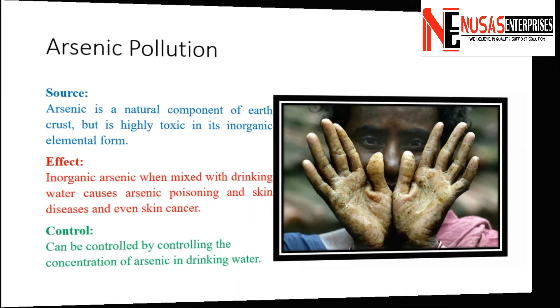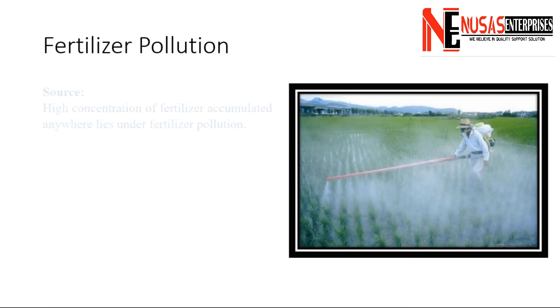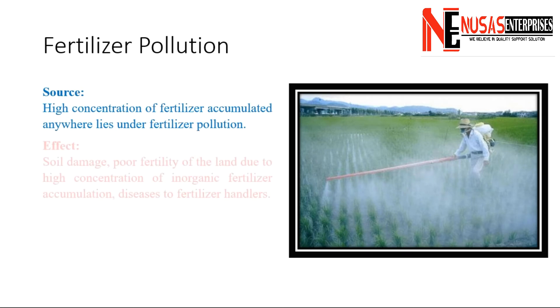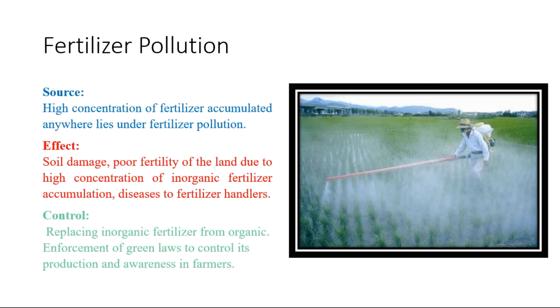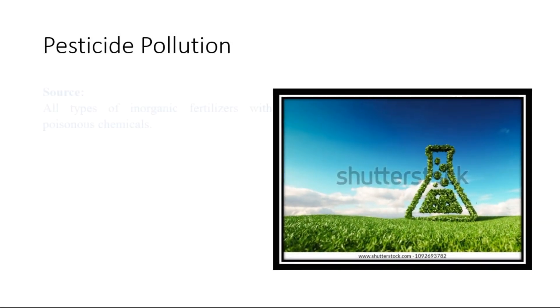Fertilizer pollution occurs when a high concentration of fertilizer accumulates anywhere. It can be controlled by replacing inorganic fertilizer with organic alternatives.